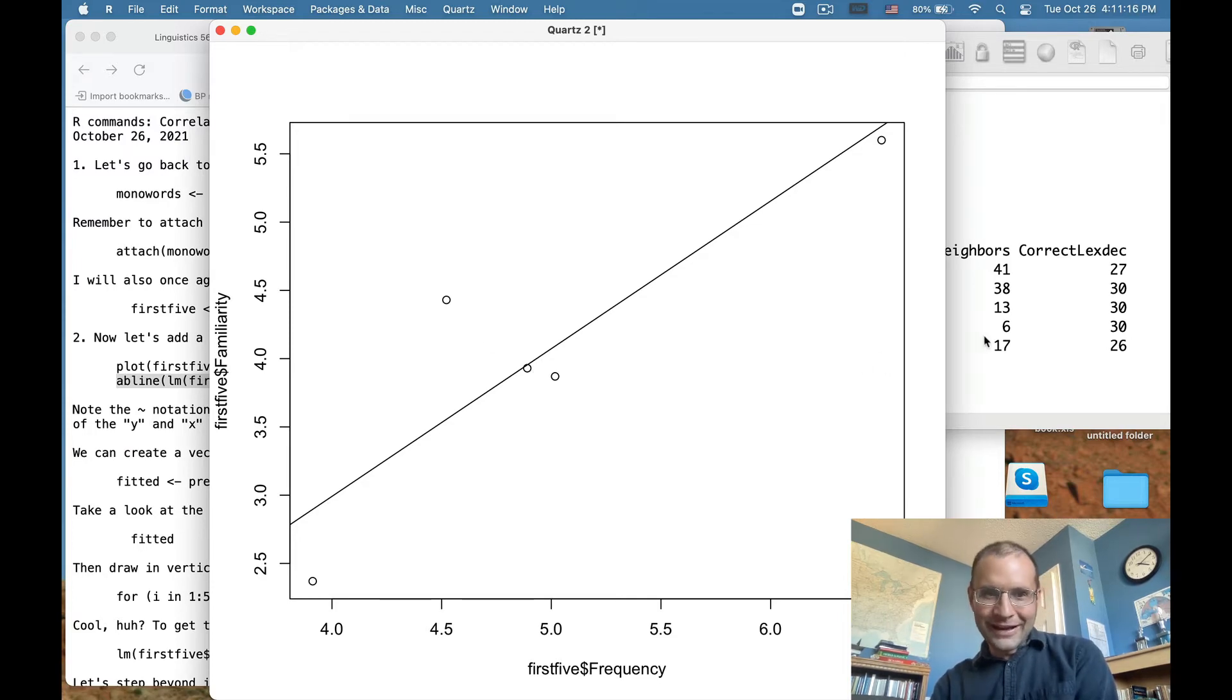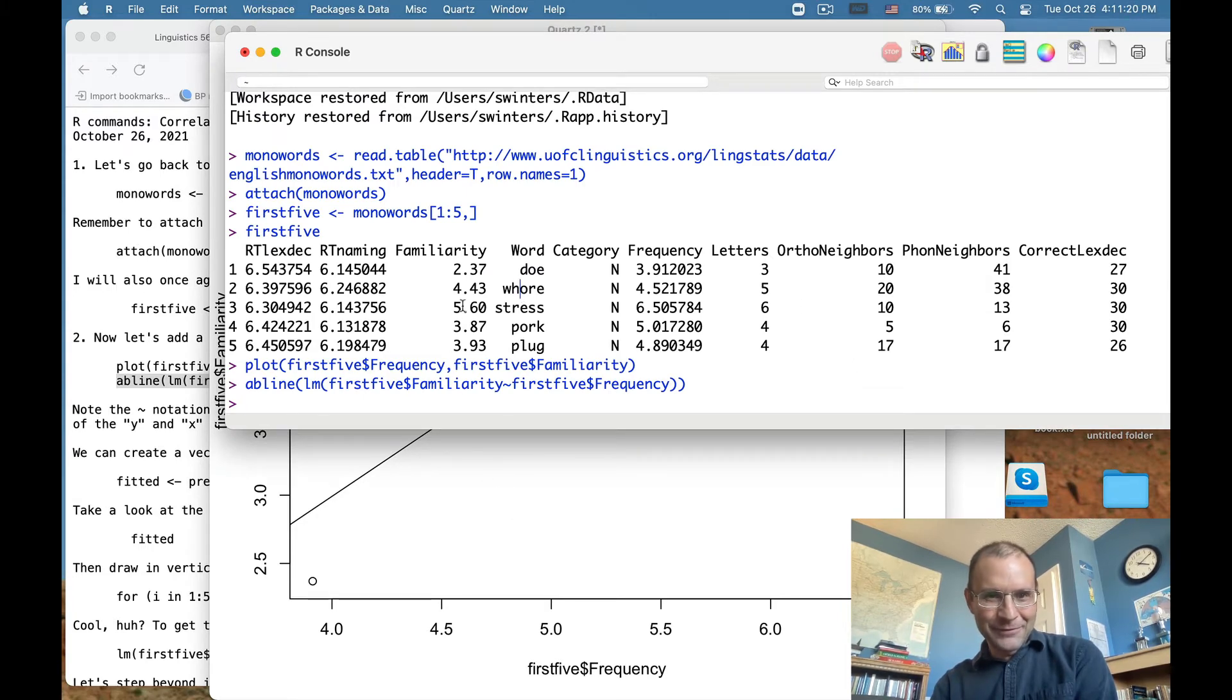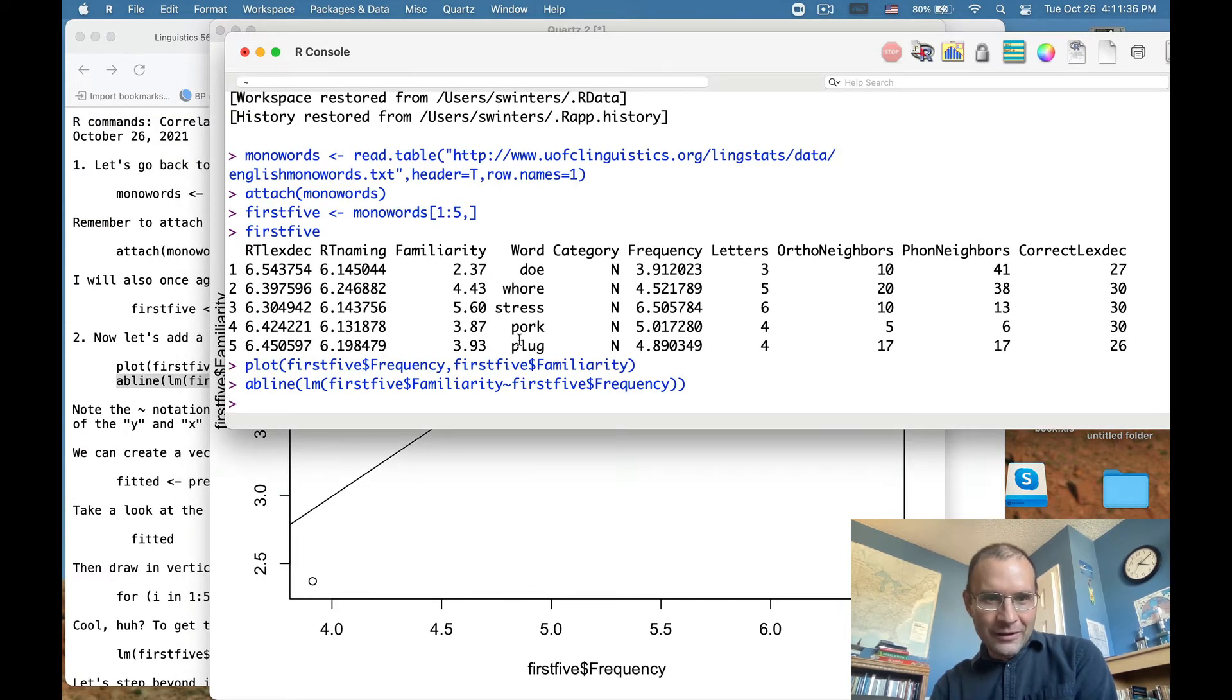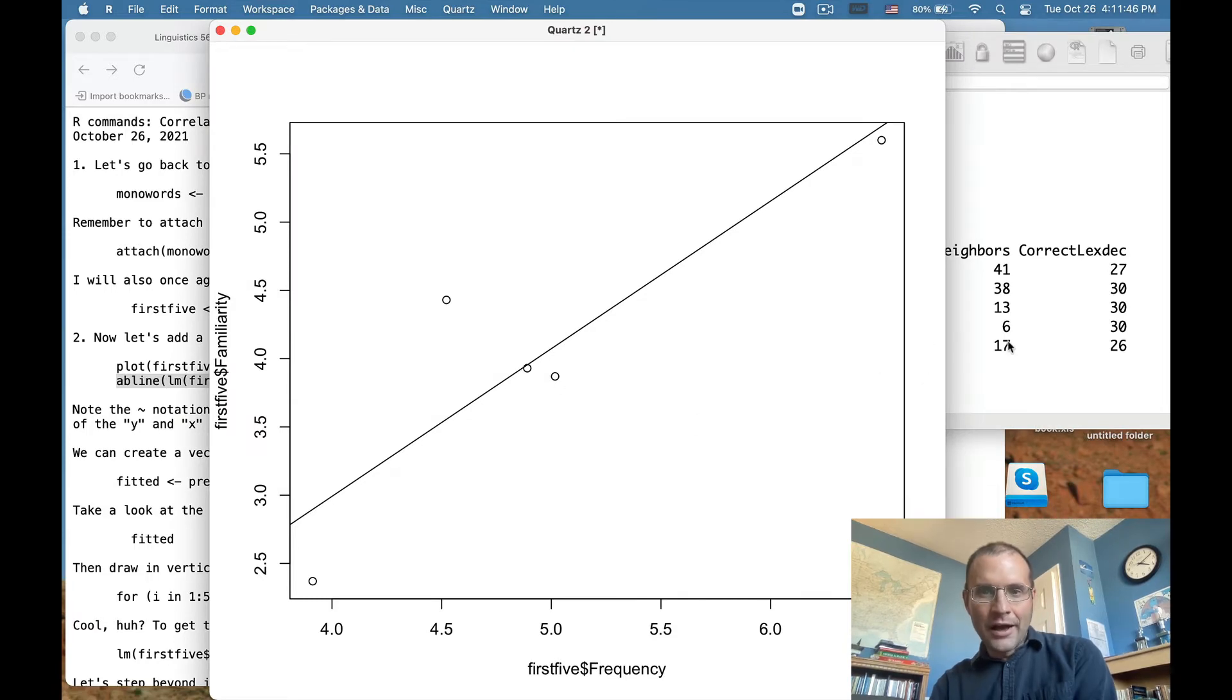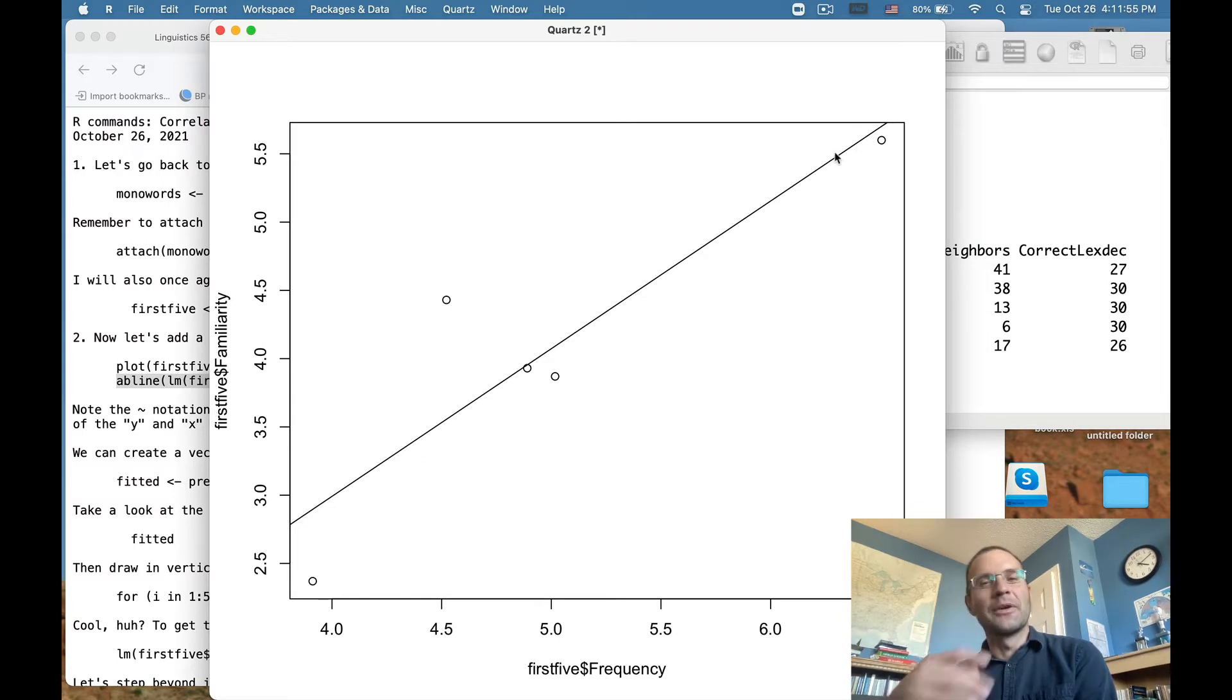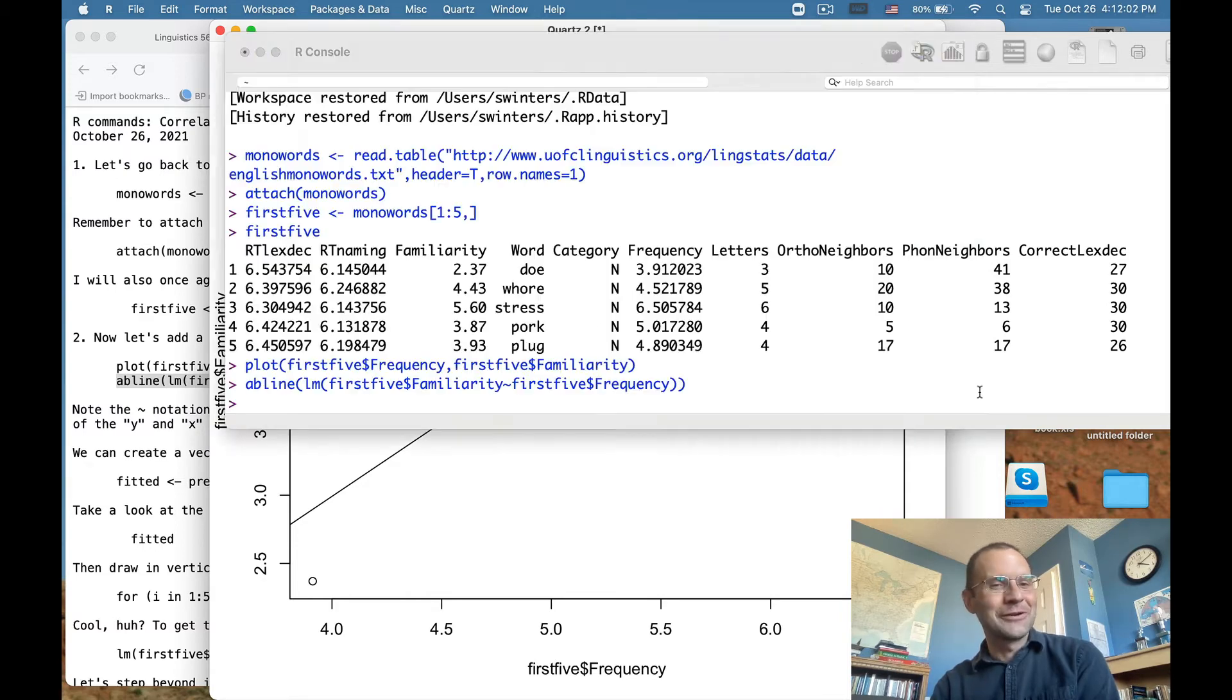So the one that kind of sticks out here on the top is our second word here, which we said might be more familiar from conversation than it is from print or wherever they get their frequency numbers. But one that's really kind of right on top of the line here is pork - about five in frequency and about four in familiarity. I think that puts us right there. So pork is about even where we'd expect it to be. So for whatever that's worth, that's what the regression line looks like based on those calculations of the math that I showed you in the previous lecture just a minute ago for me.